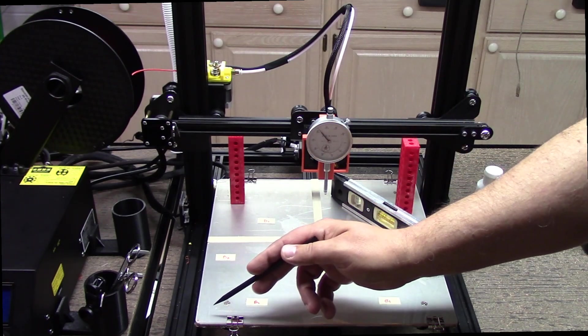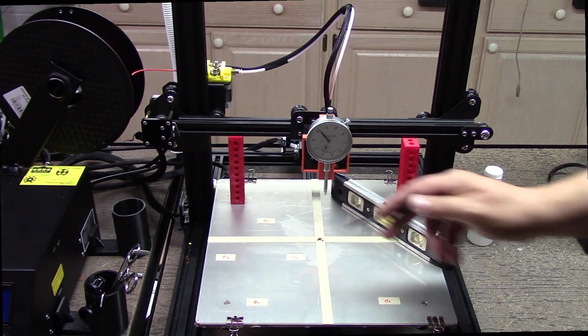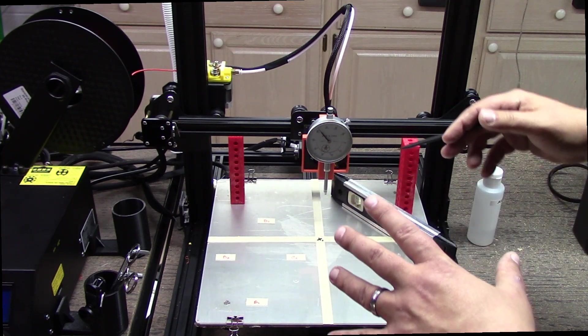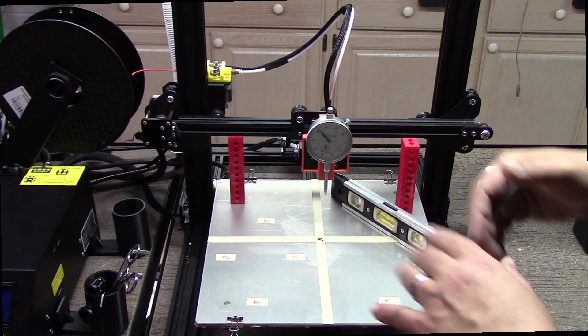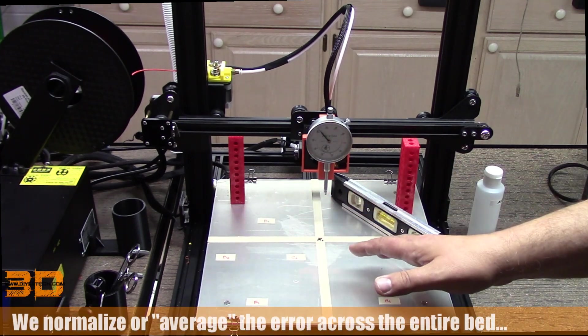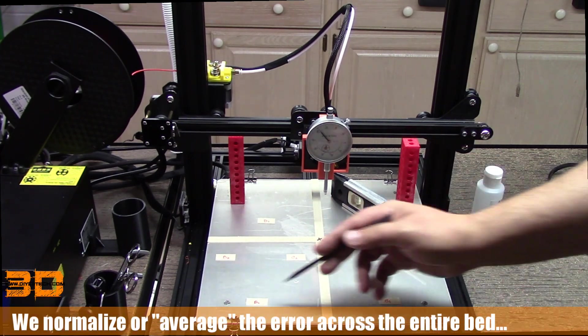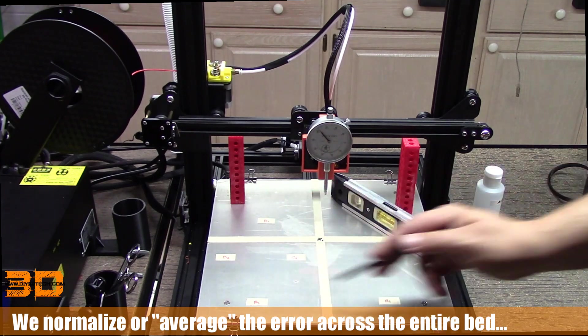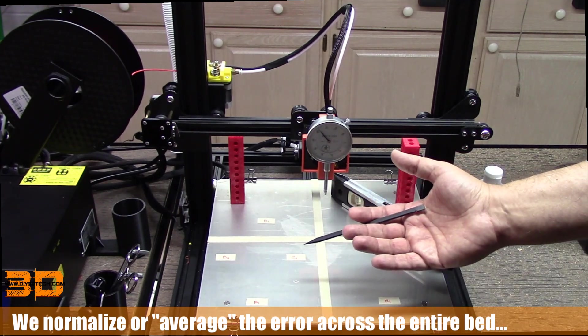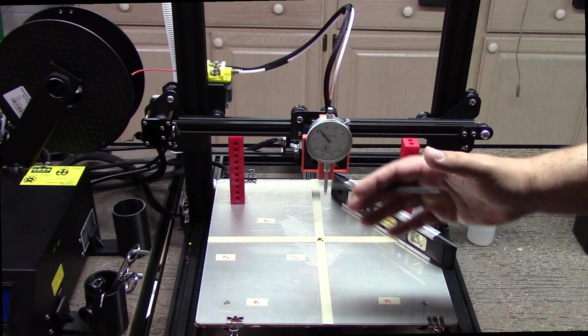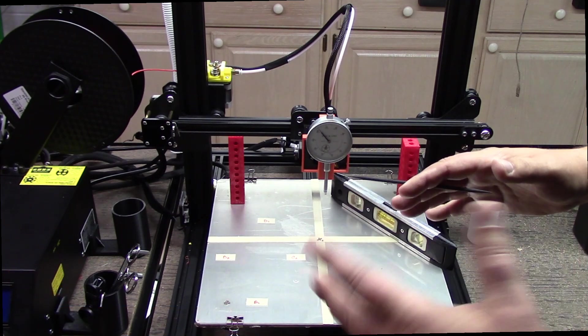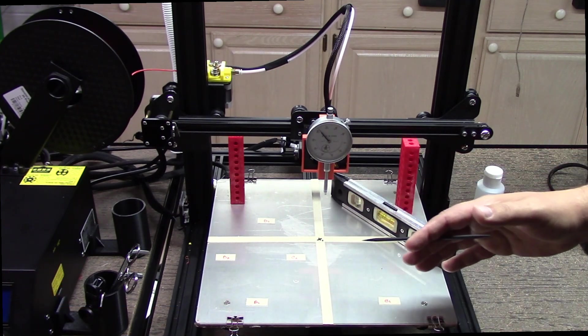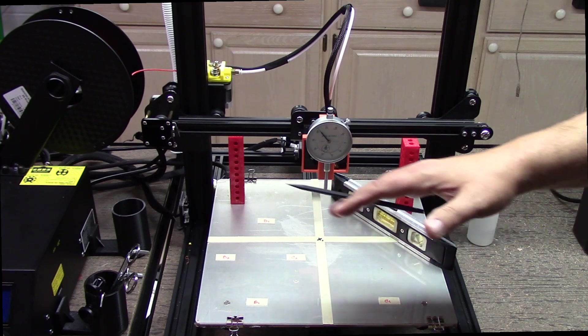This is what's important to understand. That's why what we're doing when we level the four points and then do the center is we're taking the averages of the error and we're distributing them. If I come back and just take these three points, what kind of prints do you think I'm going to get?